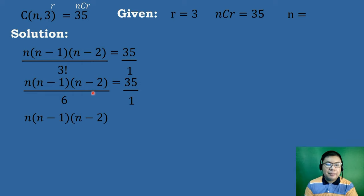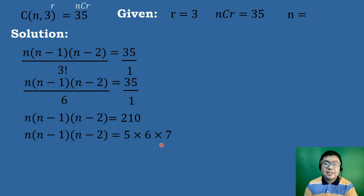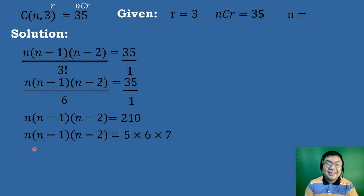We cross multiply to get n times (n minus 1) times (n minus 2) equals 35 times 6 equals 210. We find 3 consecutive factors of 210: 5 times 6 times 7 equals 210. So n times (n minus 1) times (n minus 2) equals 5 times 6 times 7. We equate the highest factor to n, so n equals 7.